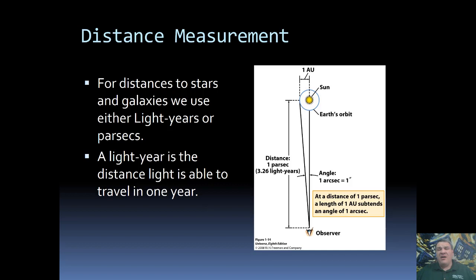Once we get beyond our own solar system, then the distances between things become so large that even an AU doesn't make any sense. So instead, we now use light years or parsecs.